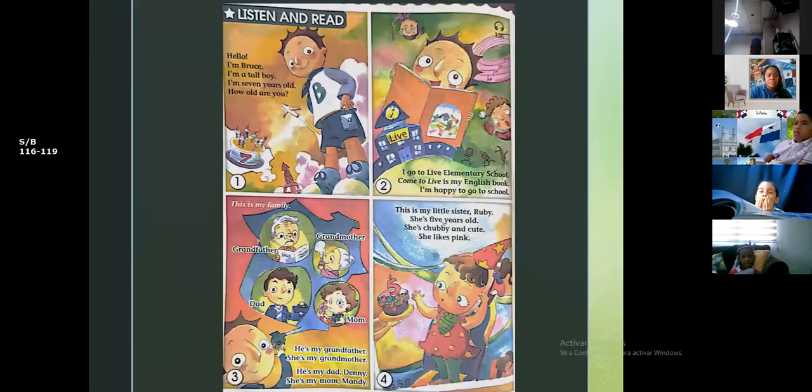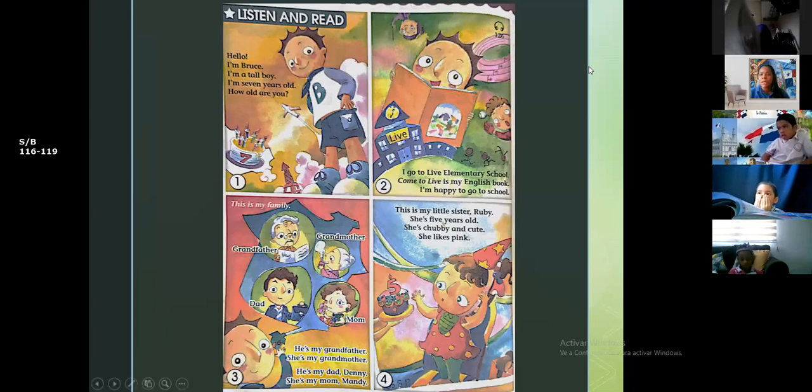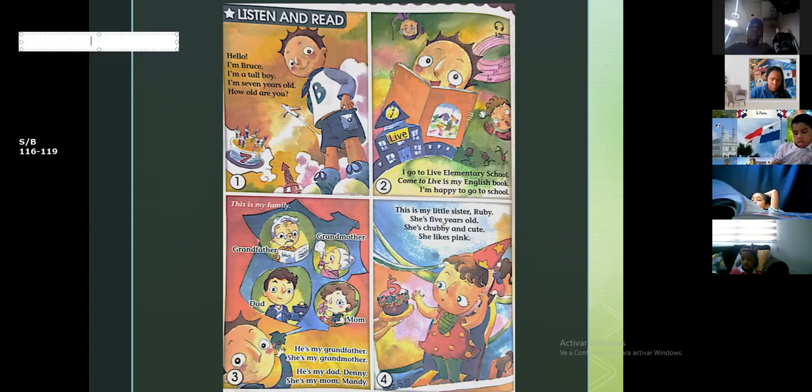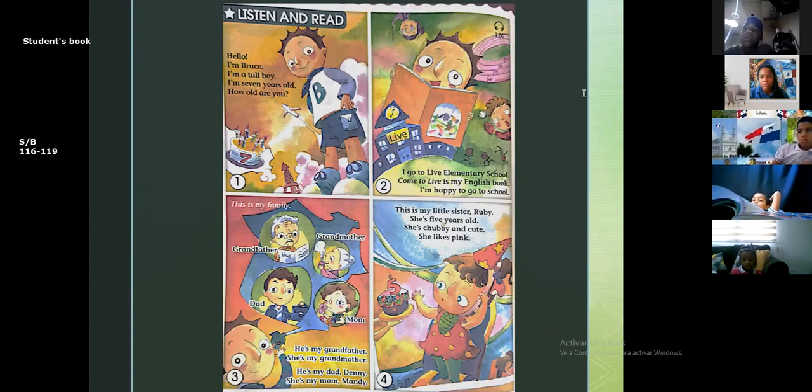All right so let's translate right now first, before we do the activity. Hola chicos, yo soy Bruce, yo soy un chico alto, yo tengo siete años. Cuántos años tienes tú? Ah maestra, usted dijo students book. Sí, el students book que empieza con la S. Ah no encuentro la página. Cuidado, estás en el workbook. Busca casi al final del libro, allí se encuentran estas imágenes. Ese libro, students book.